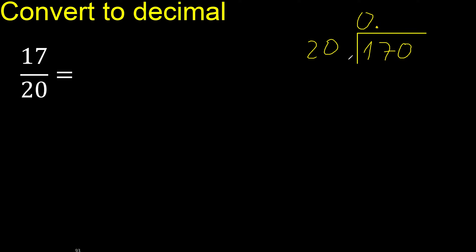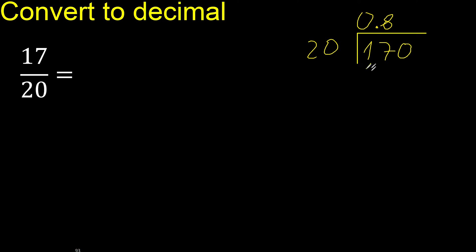170 is not less, therefore divide by 20. Multiply by which number is nearest to 170 but not greater? 20 multiplied by 9 is greater. Multiplied by 8 is 160. Subtract: remainder is 10.